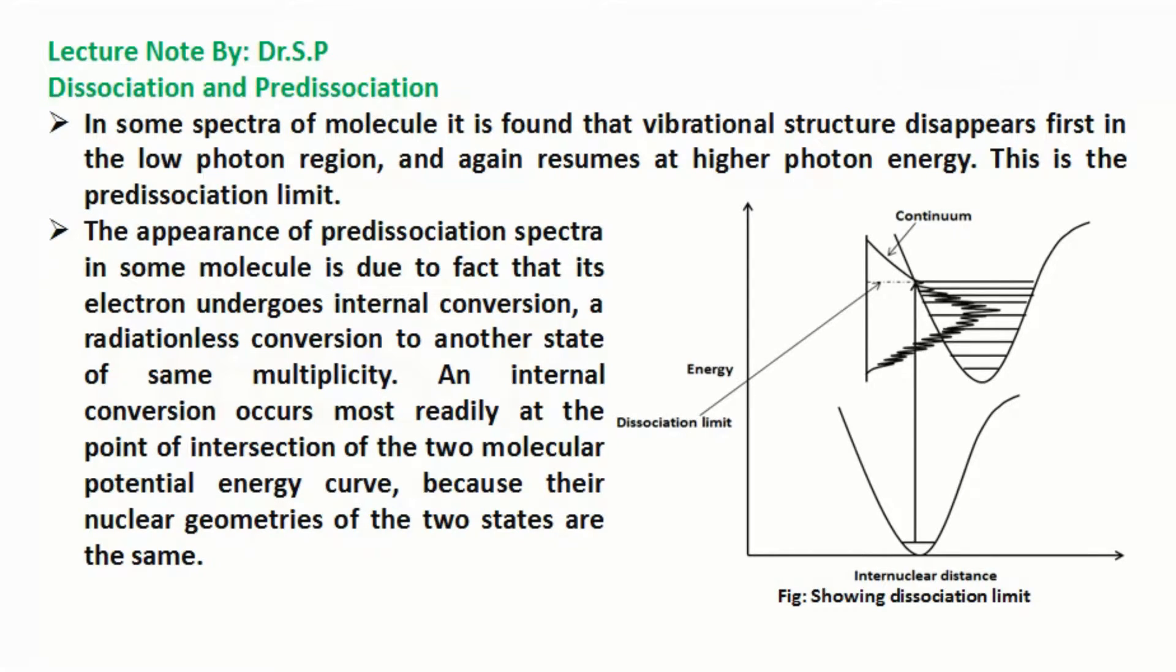The appearance of predissociation spectra in some molecules is due to the fact that its electron undergoes internal conversion, a radiationless conversion to another state of same multiplicity. An internal conversion occurs most readily at the point of intersection of the two molecular potential energy curves, because their nuclear geometries of the two states are the same.